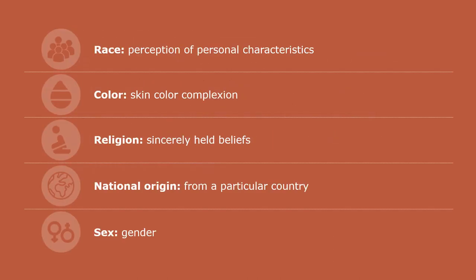Let's define each of the Title VII protected classes. Race discrimination involves treating someone unfavorably because they are of a certain race or because of personal characteristics associated with that race. Color discrimination involves treating someone unfavorably because of the color or complexion of their skin. Religious discrimination involves treating a person unfavorably because of his or her religious beliefs. The law protects all people who have sincerely held religious, ethical, or moral beliefs as well. National origin discrimination involves treating people unfavorably because they are from a particular country or part of the world, an ethnicity or descent, or they appear to be of a certain ethnic background, even if they are not. Finally, sex discrimination involves treating someone unfavorably because of that person's gender.